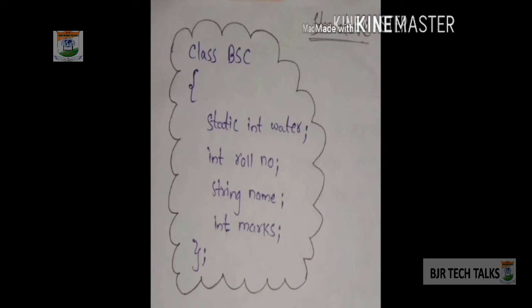This is a structure of static member. Here, we have created a class named BSE. Static integer water — water is a common resource shared to all the students. Integer roll number means the roll number of a student or object. String name — string means group of characters, and group of characters creates a person's name. Integer marks means marks of a student in the class.